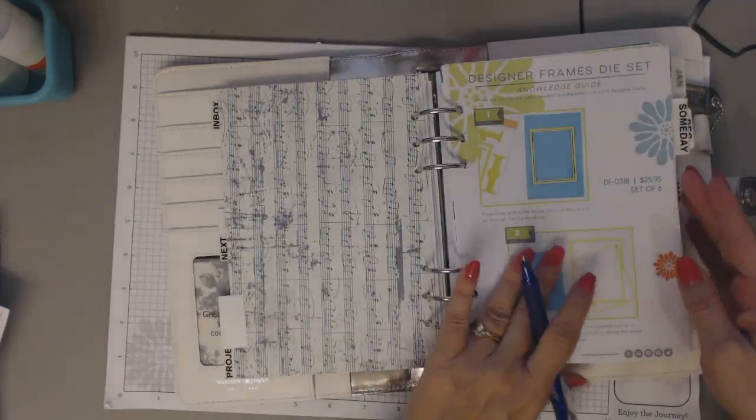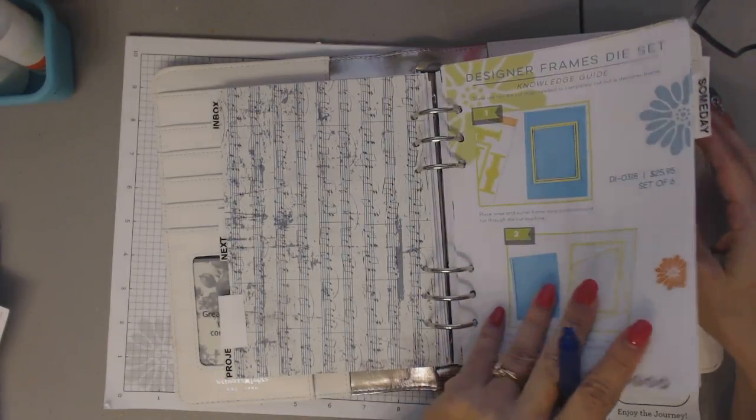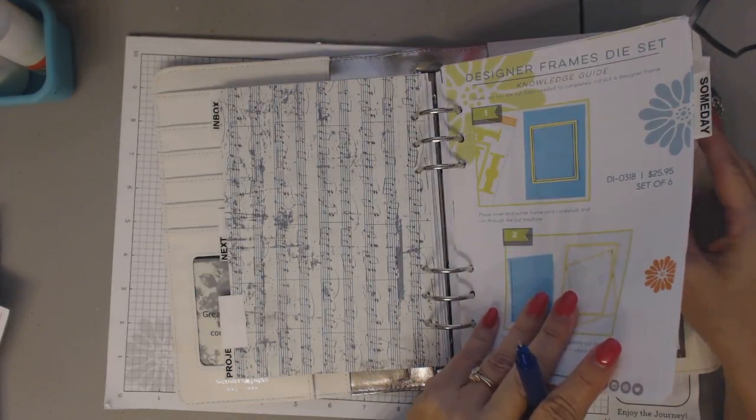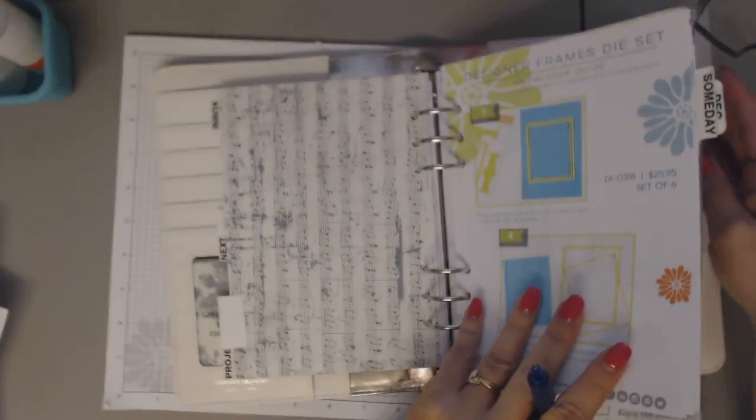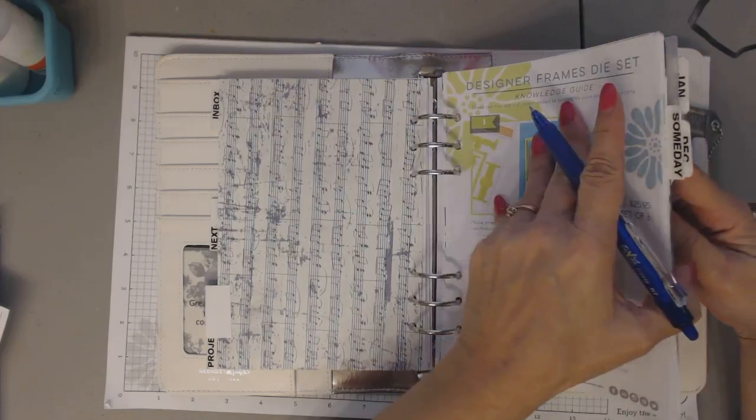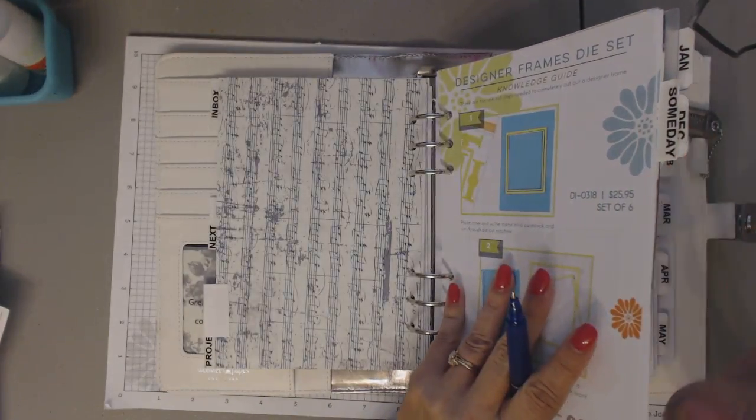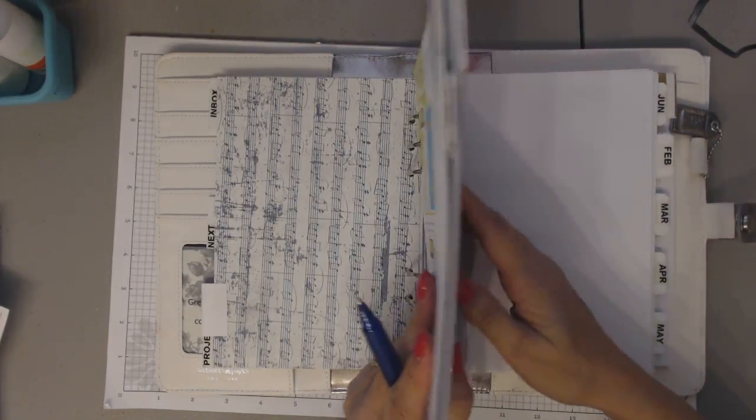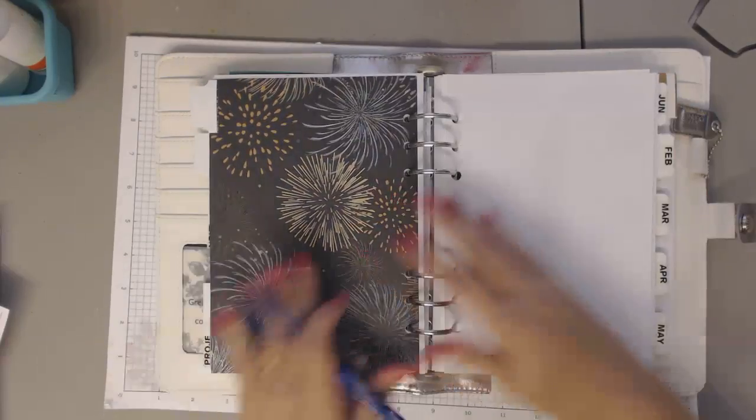And then I have a reference section, which is pretty much business related. A someday section where I just jot down things I may want to do in the future. I'm not going to go through the whole GTD system because I have done that before. And I may do a sort of walk you through a weekly review next year. So that's one of my plans.